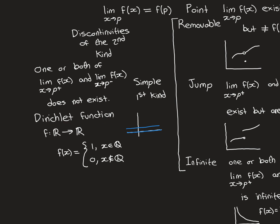This is called the Dirichlet function. It maps the real line to the real line by the rule: f(x) = 1 if x is rational, and f(x) = 0 if x is irrational. It's difficult to plot — it looks like two solid lines, because the infinitely many (countably infinite) rational numbers all plot onto 1, giving a line that appears solid when zoomed out, though it has holes at all the irrational positions.